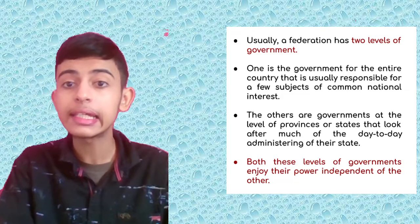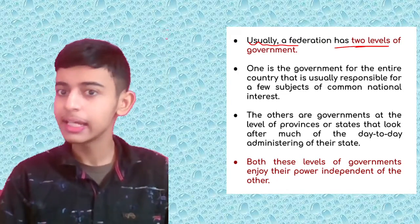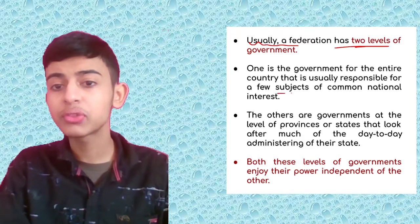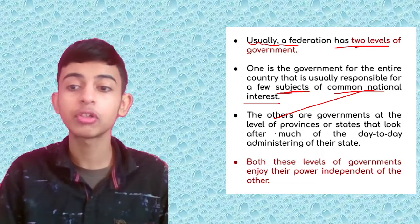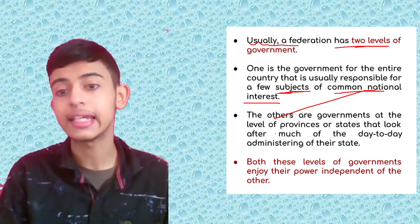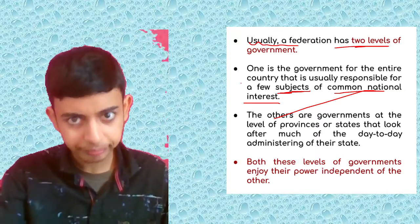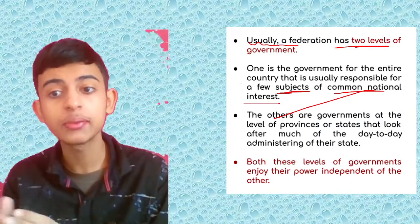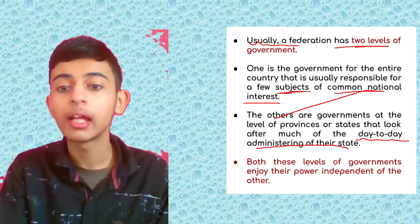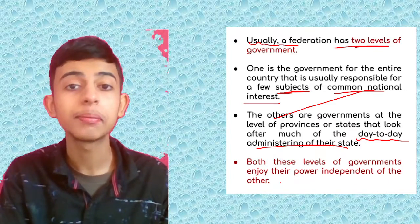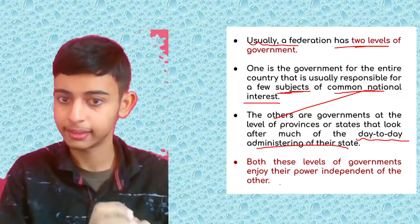Usually, a Federation has two levels. One is the government for the entire country, which is responsible for a few subjects of common national interest. The others are governments at the level of provinces or states that look after much of the day-to-day administration of their state. Both these levels of government enjoy their power independent of the other — they are not dependent on each other and have their different parts.